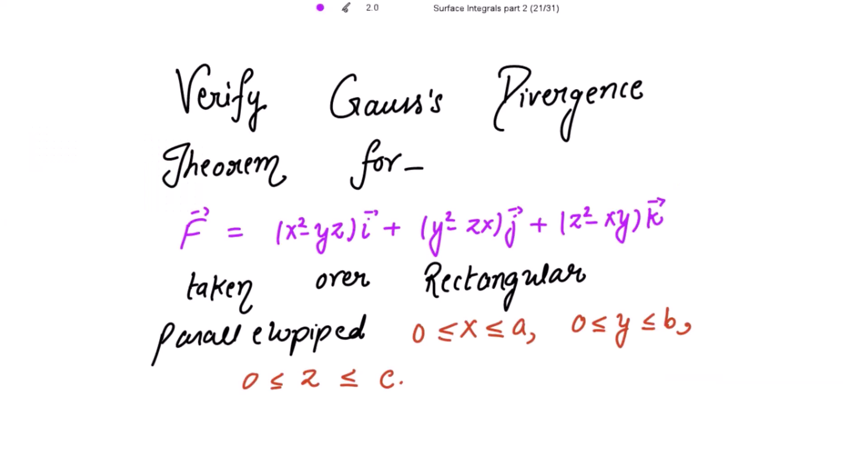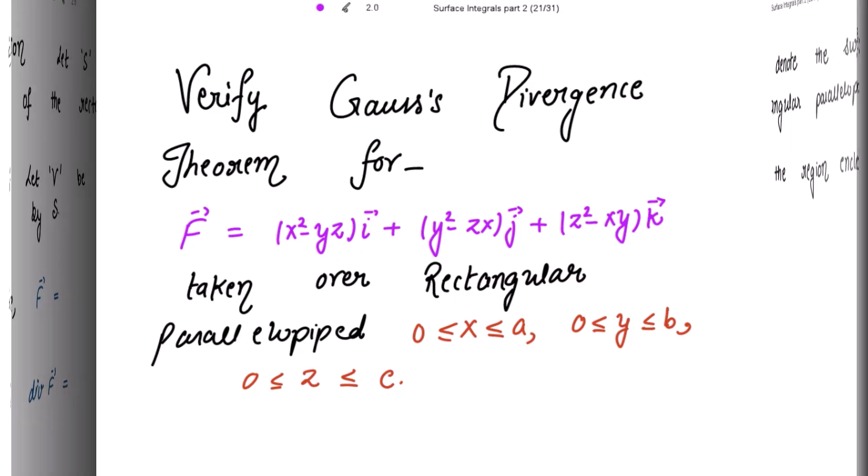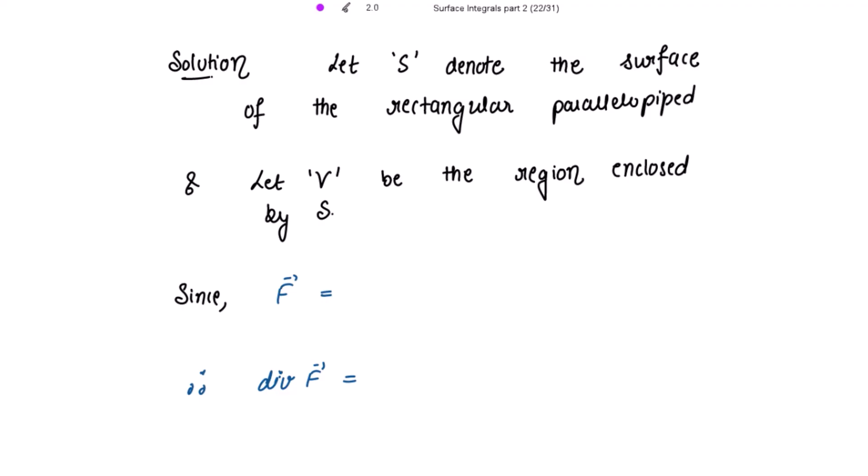To verify the Gauss's Divergence Theorem for the F-vector taken over a rectangular parallelepiped where x is greater than or equal to 0 and less than or equal to a, y is greater than or equal to 0 and less than or equal to b, and z is greater than or equal to 0 and less than or equal to c. Let S denote the surface of the rectangular parallelepiped and let V be the region enclosed by the surface.